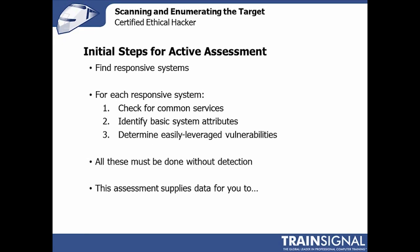Early on in an active assessment, the first thing you want to do is find responsive systems — which systems are powered on and responding on the network? Think of it as pinging every system on a network and seeing which ones respond. Then, for the systems that respond, you want to check for common services like FTP, Telnet, port 80 indicating a web server, or Microsoft-specific ports indicating a Microsoft operating system. All of this feeds into the data you're gathering about the hosts and the network itself.